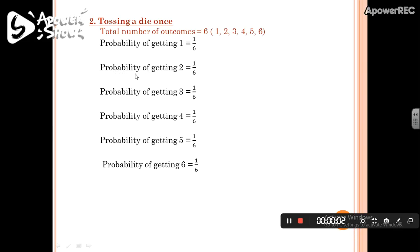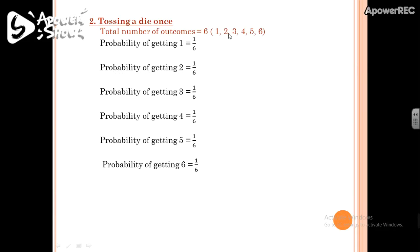Similarly, the probability of getting 2 equals 1/6, where 1 is the number of ways 2 can occur — since 2 can occur only once — and 6 is the total number of outcomes. In this way, you can calculate the probability of getting any other outcome as well.